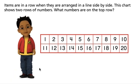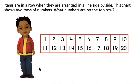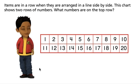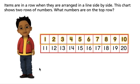Items are in a row when they are arranged in a line, side by side. This chart shows two rows of numbers. What numbers are on the top row?